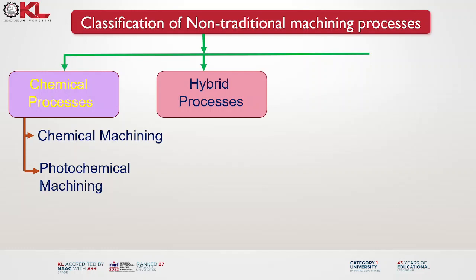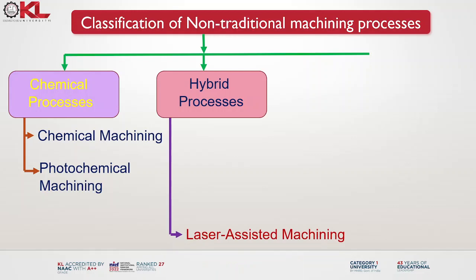Next, hybrid processes combine different manufacturing methods or techniques to leverage the advantages of each process and overcome their limitations. These processes often involve the integration of multiple technologies to achieve improved efficiency, precision or functionality in manufacturing. Hybrid processes offer numerous benefits including improved efficiency, enhanced precision, expanded capabilities and better utilization of resources. Sub-classifications include laser assisted machining.